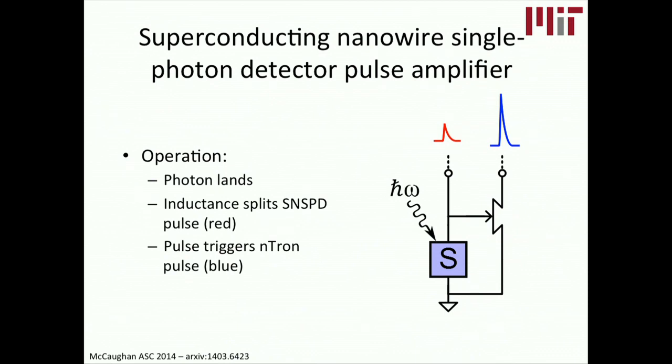At the end of the day, we were able to have these two coax lines going into the Dewar with this monolithically integrated, just patterned in a single E-beam step, single photon detector and n-tron, like digital comparator slash pulse amplifier.